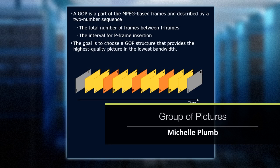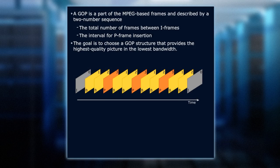A GOP — not the political party, but the Group of Pictures — is part of the MPEG-based frames. It is described by two sequences: the total number of frames between I-frames and the interval for P-frame insertion. The goal is to choose a Group of Pictures structure that provides the highest quality picture with the lowest bandwidth.